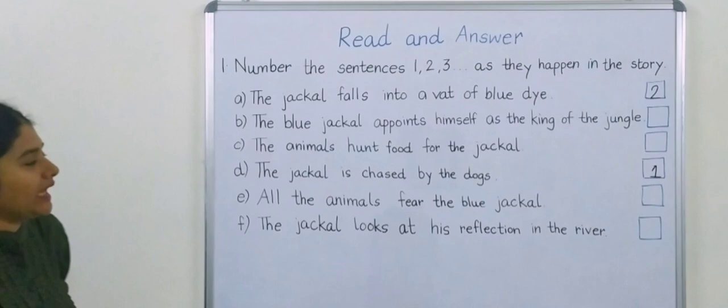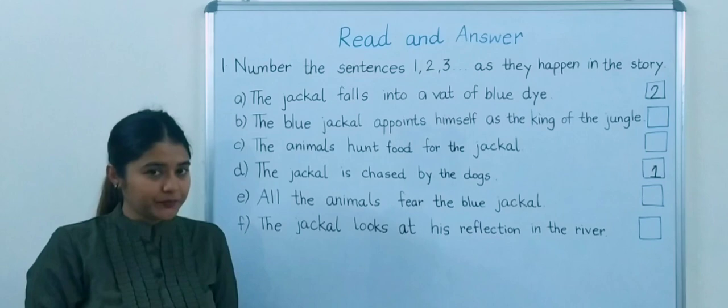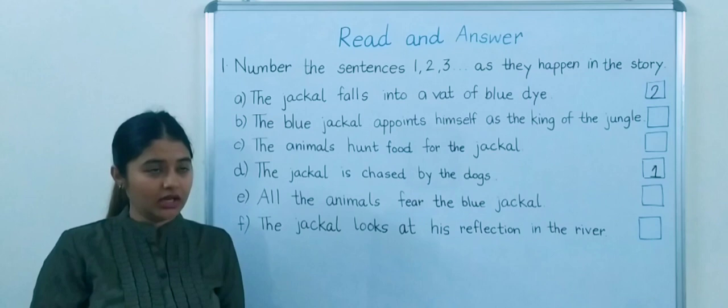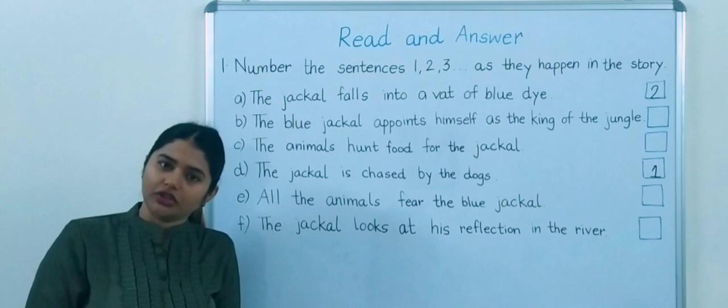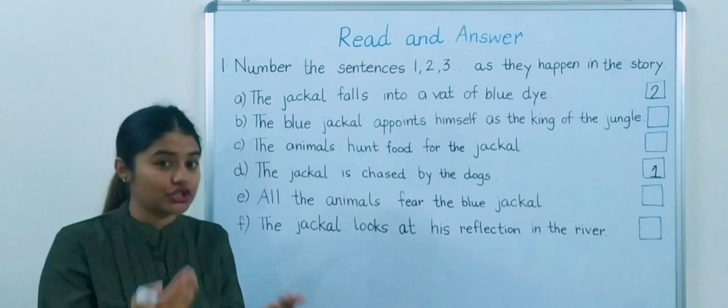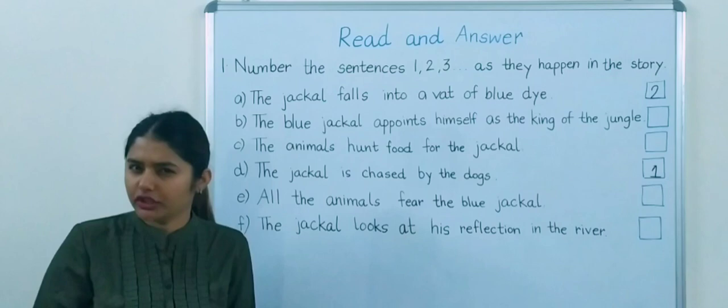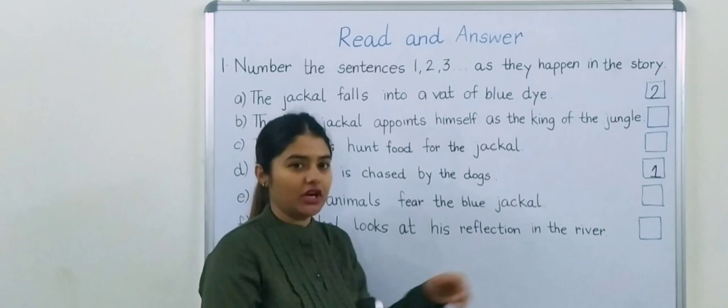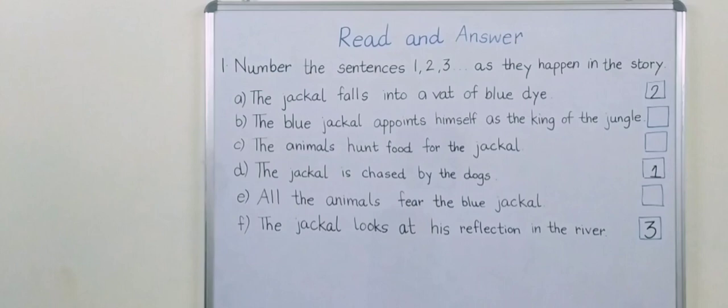Then what happened? He stayed there only till dawn. But before the sun rose, he left that place. And while he was going back to the jungle, in the way, he felt thirsty. So he went to the river to have some water. While he went to the river, he saw his own reflection in the water, and he got surprised. As now, he was of what color? He was of blue color. So, the jackal looks at his reflection in the river will be point number 3.